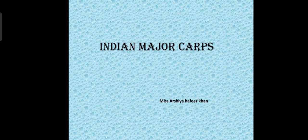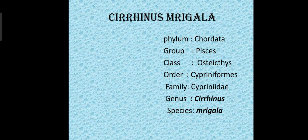Hello students, today we are going to discuss about the Indian major carps. First of all, you should know the meaning of carps — carps means toothless fishes which are found in rivers. Indian major carps are found in Indian rivers, which are very easily available and economically very important fishes. For example, Cirrhinus mrigala, Katla katla, and Labeo rohita are also Indian major carps.